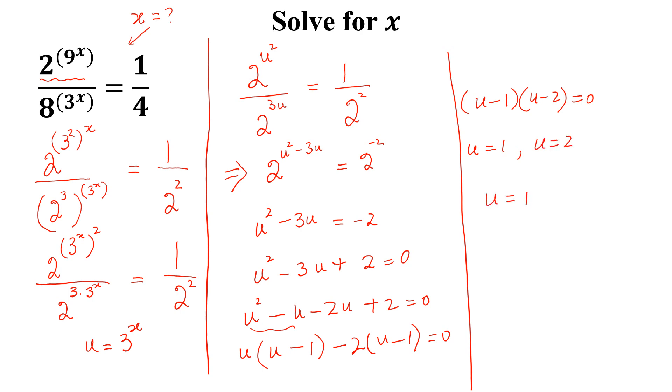If u equal to 1, this implies 3^x equal to 1. And we can write this as 3^x equal to 3^0. The bases are same, so x equal to 0. And this is the first solution.